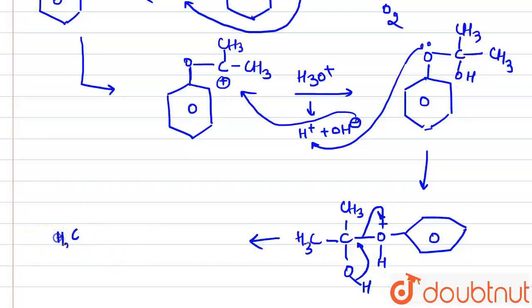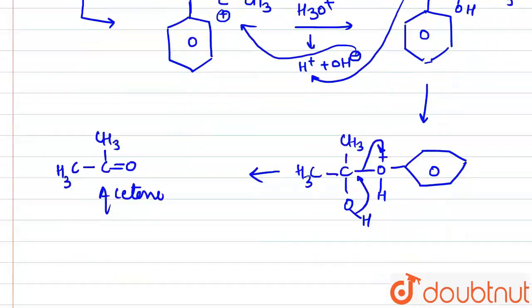So the product here formed will be CH3-C double bond O-CH3, that is acetone, along with phenol. So the second product will be phenol. So this will be the required answer.